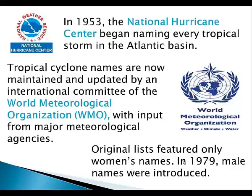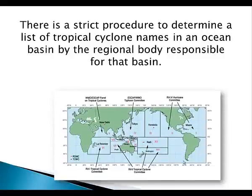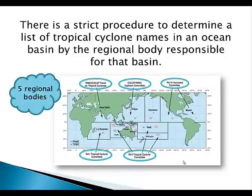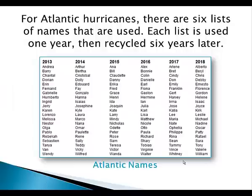Original lists featured only women's names, but in 1979 male names were introduced as well. There is a strict procedure to determine a list of tropical cyclone names in an ocean basin by the regional body responsible for that basin. There are five regional bodies across the tropical globe. The one closest to home is the RA4 hurricane committee, of which the National Hurricane Center is a member. For Atlantic hurricanes, there are six lists of names that are used — each list is used one year, then recycled six years later. So the list of names used in 2013 will again be used in 2019.